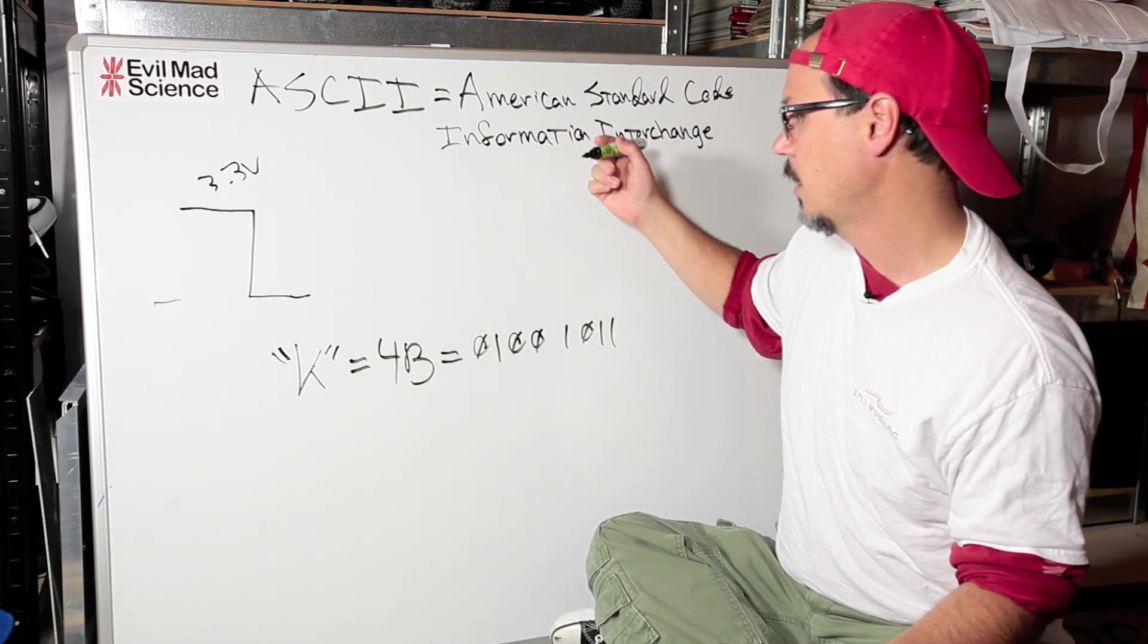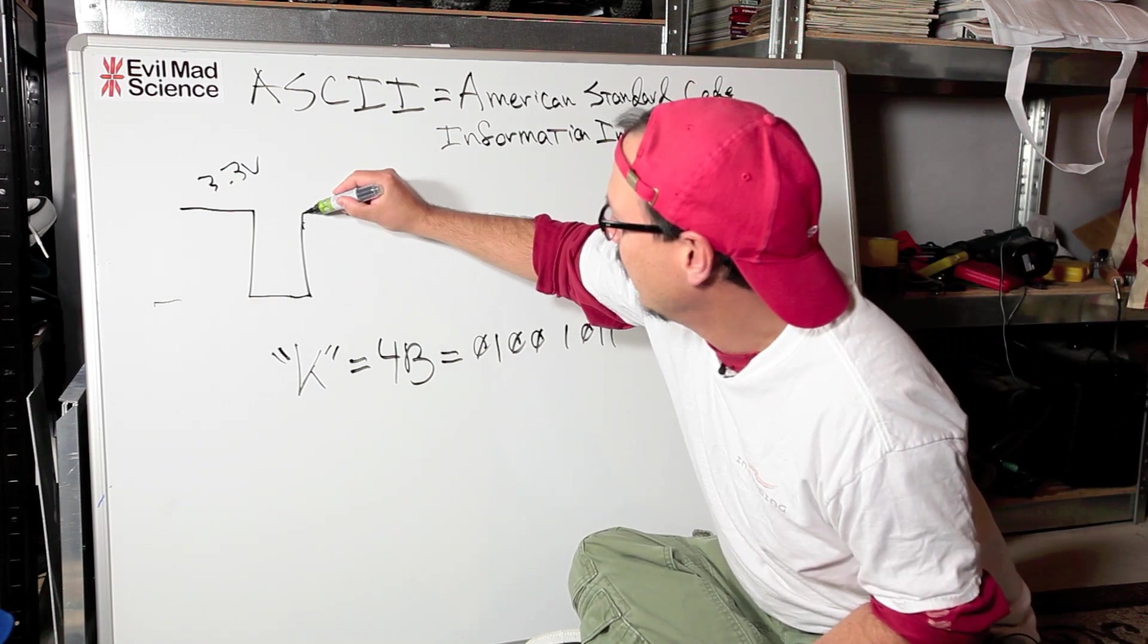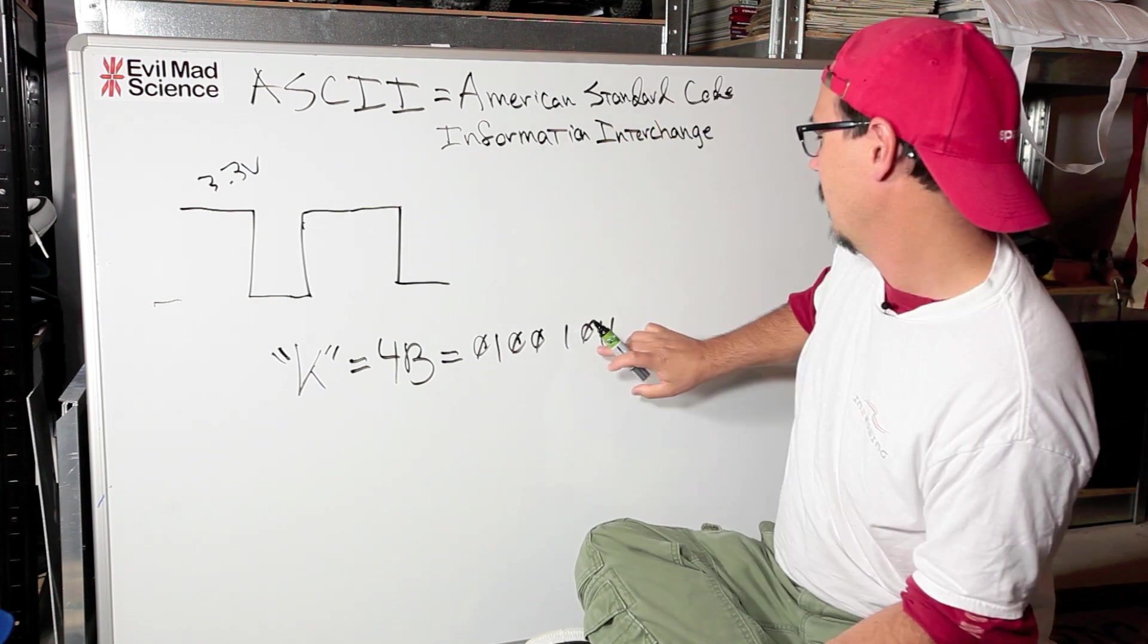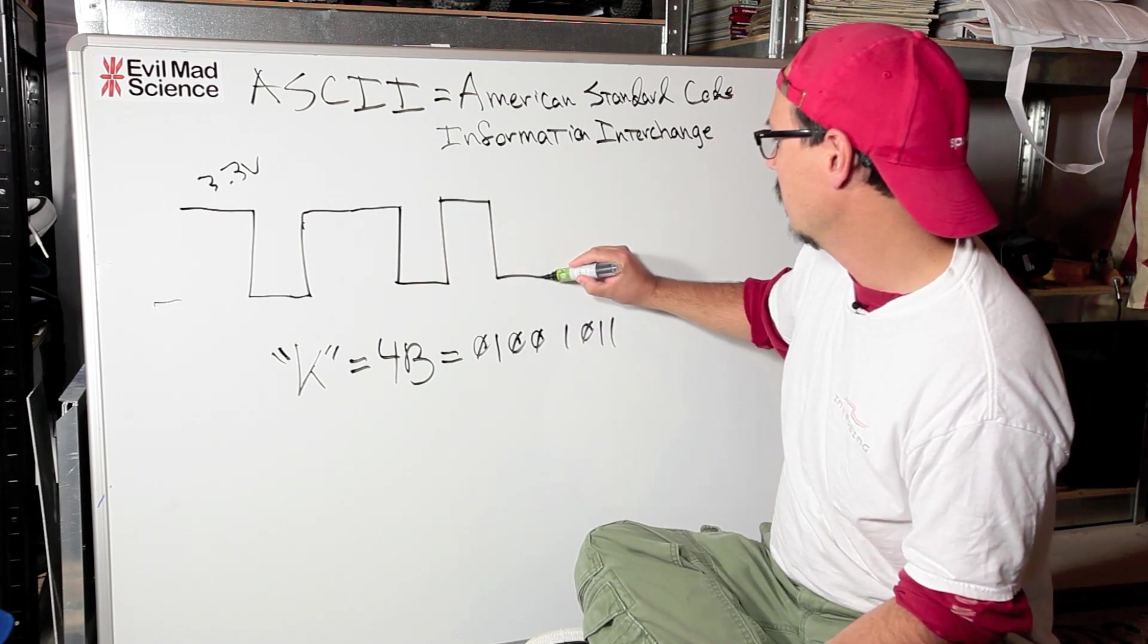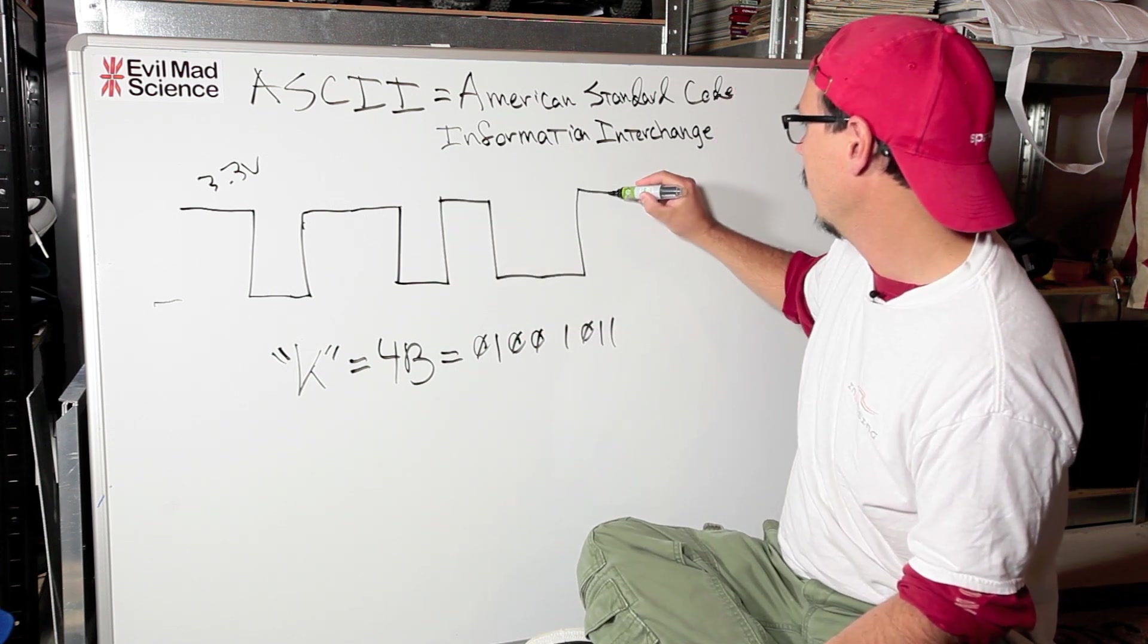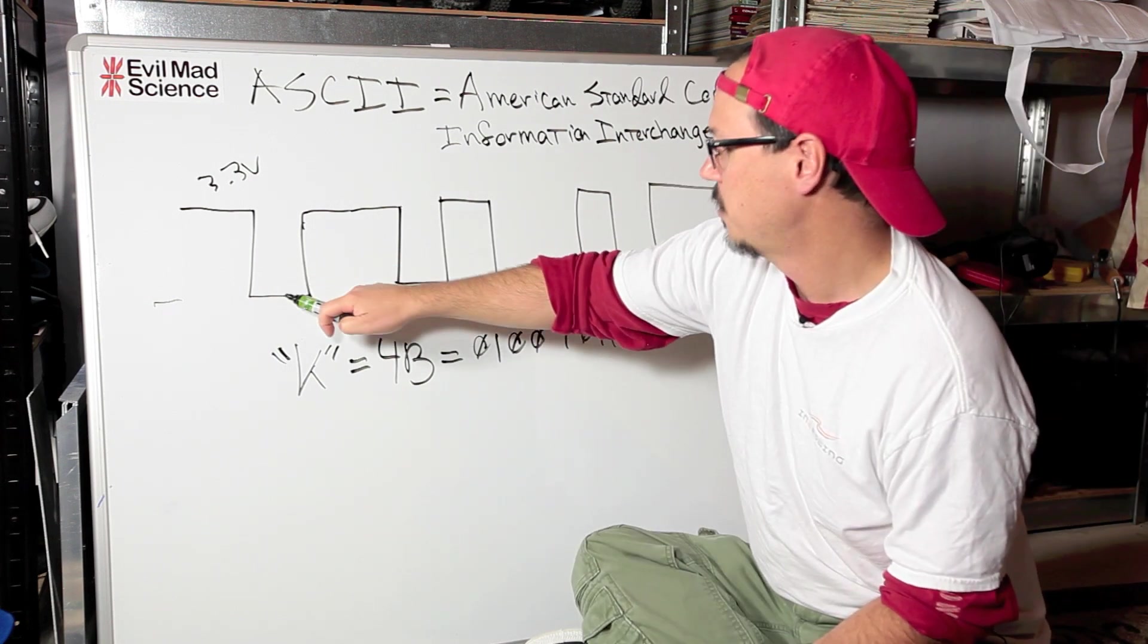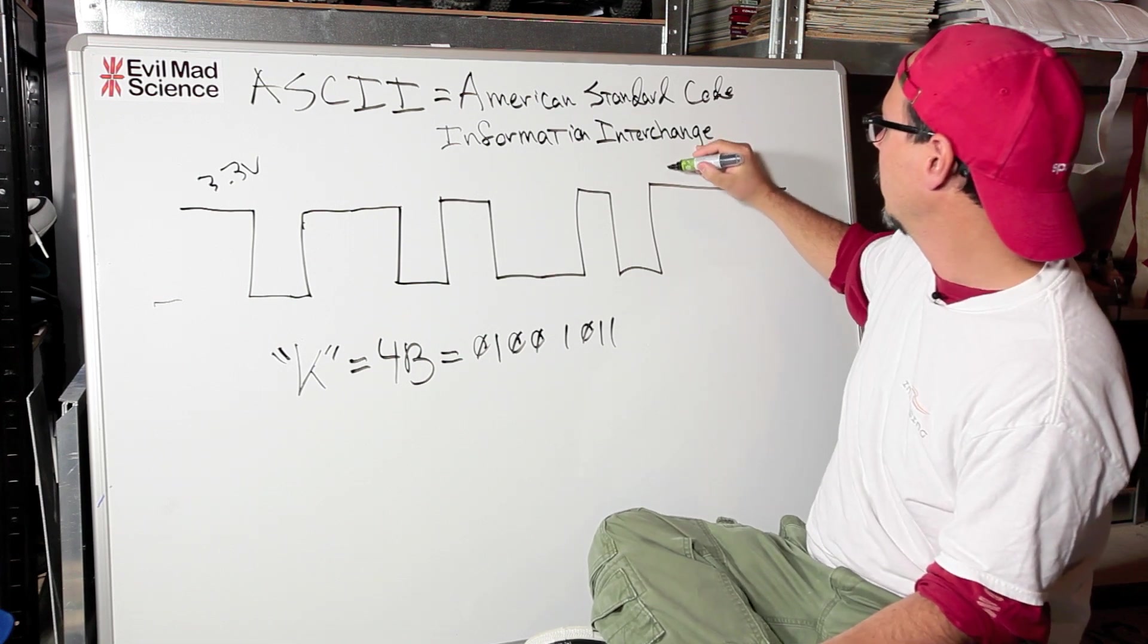For a capital K, what you're going to see, so it's going to start out here. You're going to have a low there, and then you're going to get a high there, and a high there, and then a low, one, one, zero, one, zero, zero, one, zero, and then it's going to go high again. So this is our start bit, and then we start clocking data out. Then this is called the stop bit.